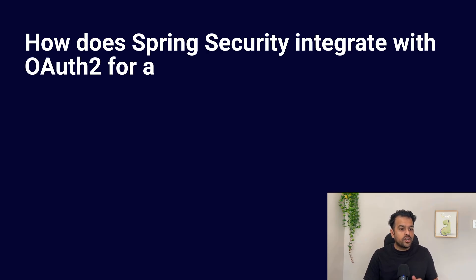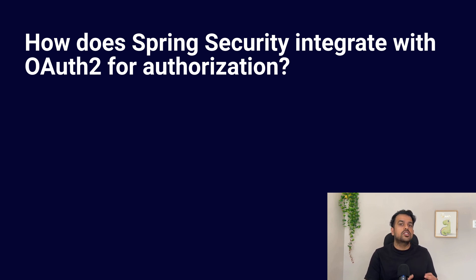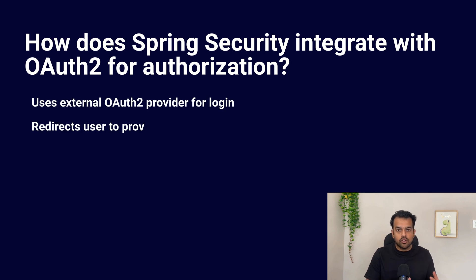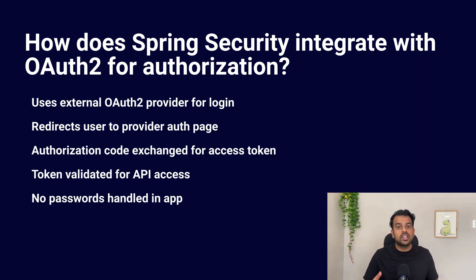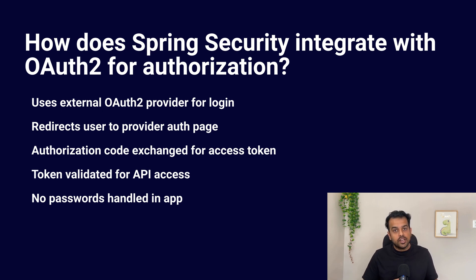The first question is: how does Spring Security integrate with OAuth2 for authorization? When we say OAuth2 with Spring Security, we are basically talking about using an external provider to handle the login and token generation. Spring Security works as the client here. When a user tries to access a protected resource, Spring Security checks if the user is already authenticated or not.